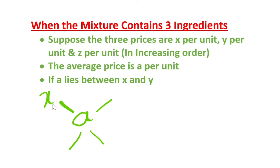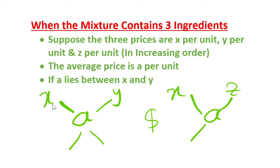When the average price 'a' lies between x and y, we need to write the allegation two times. The first allegation is written with x and y, using average price 'a'. The second allegation is also written alongside. So if you have three ingredients and 'a' lies between x and y, we need to draw two allegations in this way.